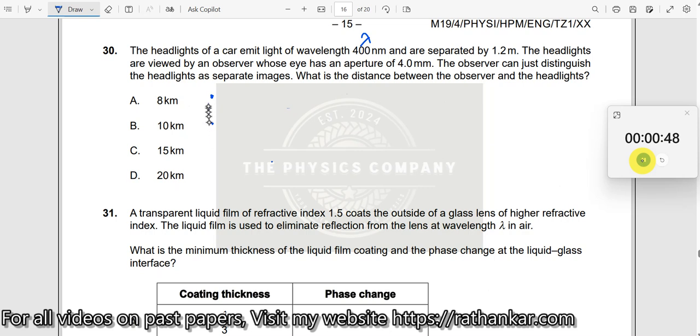So, you have two headlights are being shown over here. The distance between them is seen to be 1.2 meters. The headlights are viewed by an observer whose eye has an aperture of 4 millimeters.